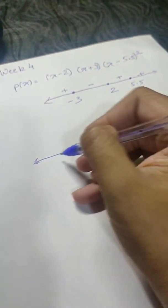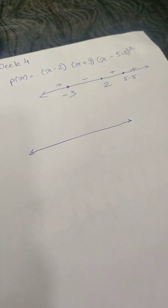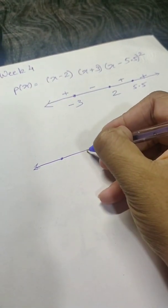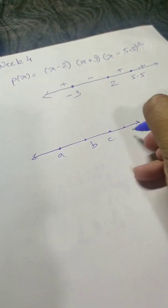If we have a timeline or x-axis and we have roots here, let's say 1, 2, 3, and 4. Let's say a, b, c, and d.